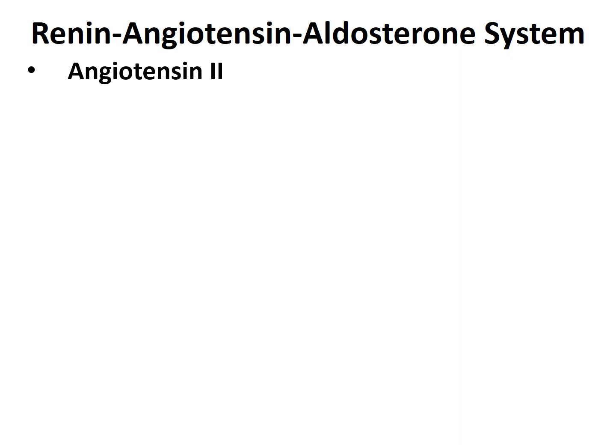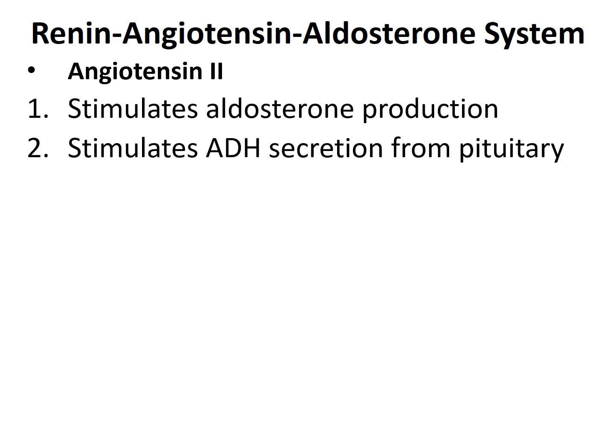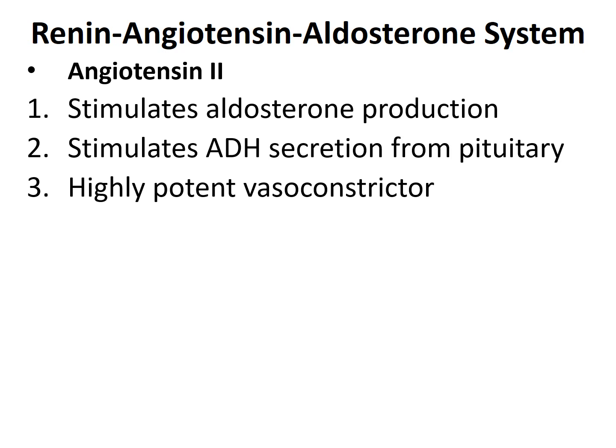Angiotensin 2 has distinct functions. It acts on the zona glomerulosa cells of the adrenal glands to secrete aldosterone, which increases sodium reabsorption. It also stimulates antidiuretic hormone (ADH) from the pituitary, increasing water reabsorption. Angiotensin 2 can directly act on blood vessels as one of the most potent vasoconstrictors via angiotensin receptors, and it can stimulate thirst.